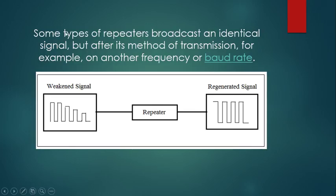Some types of repeaters broadcast an identical signal but alter its method of transmission. For example, on another frequency or baud rate. This means that when a weakened signal is transmitted through a repeater, it gets converted into a regenerated signal in the form of another frequency or baud rate.